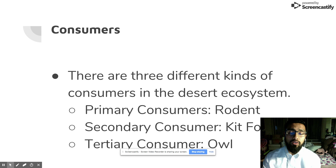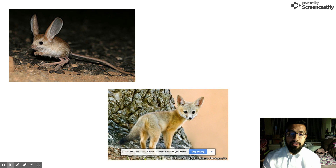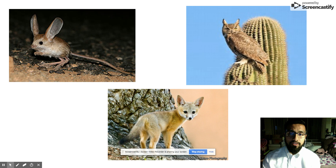Now, consumers. There are three different kinds of consumers in the desert ecosystem: primary consumers, secondary consumers, and tertiary consumers. For a primary consumer we have a rodent, the secondary consumer is a kit fox, and the tertiary consumer is a desert owl.